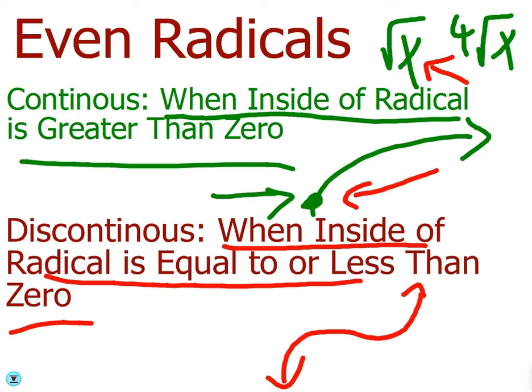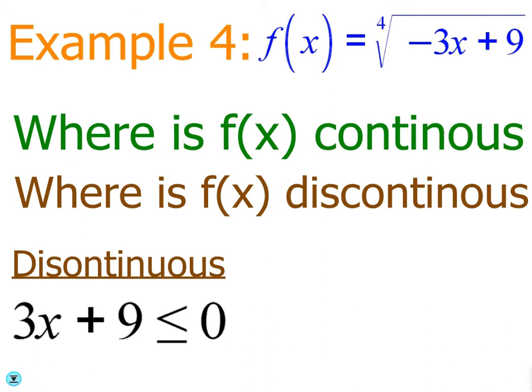But anyways, let's do an example with an odd radical. So we have the fourth root of negative 3x plus 9. So all you're going to do is, you only have to figure out one or the other. We'll go ahead and figure out where it's discontinuous. So set it less than or equal to zero. That's where it's discontinuous.